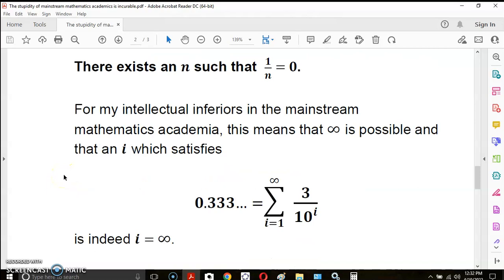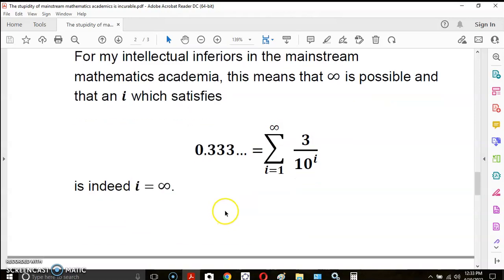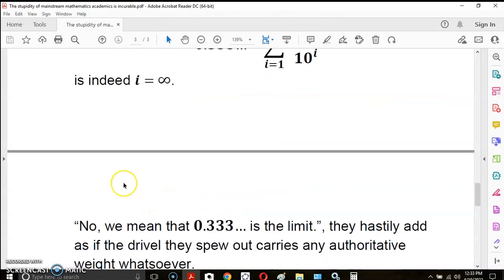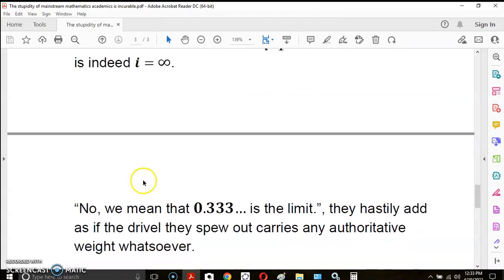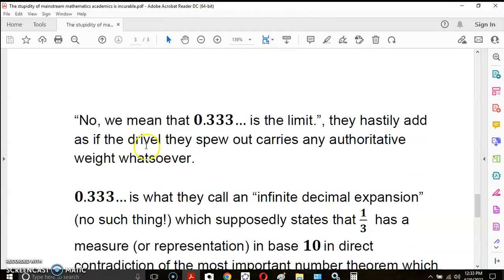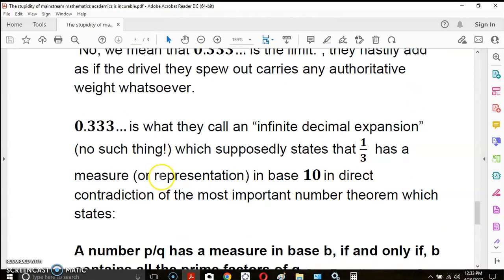So what they think is that infinity is possible and that there is an I which satisfies this sum here. In other words, the I actually reaches its goal, which is to be infinitely large and indeed is equal to infinity. I mean, you know, you'd probably believe mythology before, if you have a normal working brain, you'll believe mythology before you believe in this bullshit. No, we mean that 0.333 is the limit. And they carry on with a lot of other hand waving garbage, hastily adding whatever they want as if the drivel they spew out carries any authoritative weight whatsoever because they're all morons.